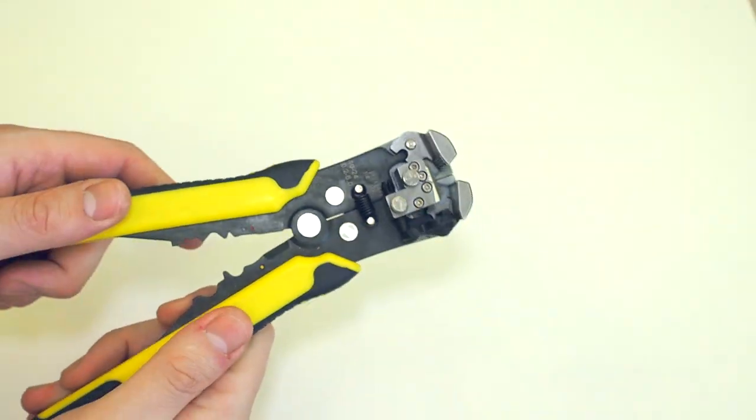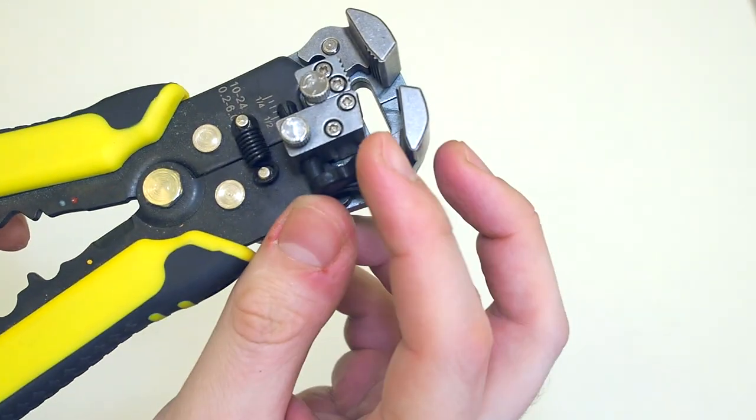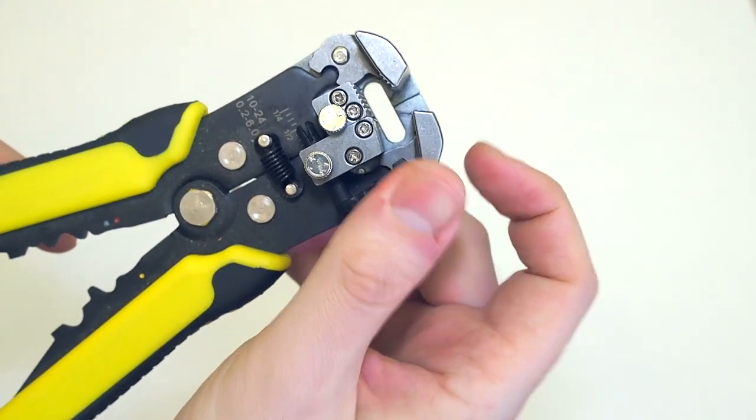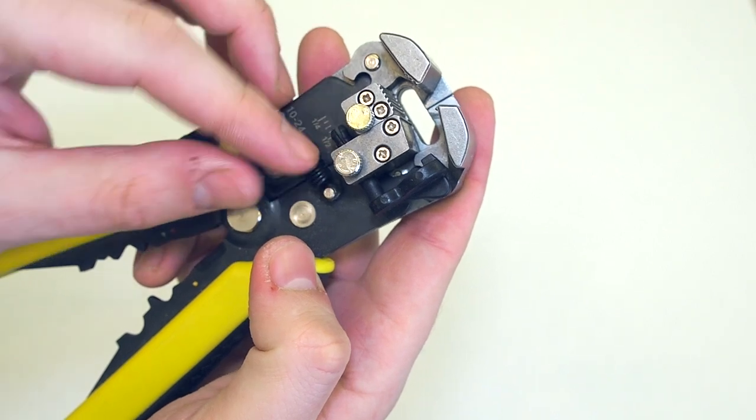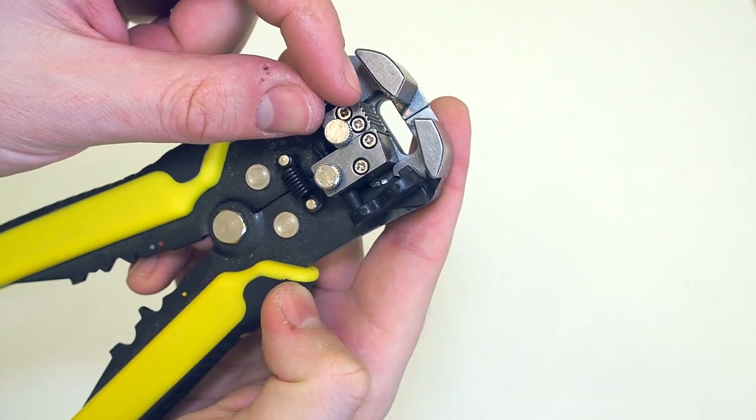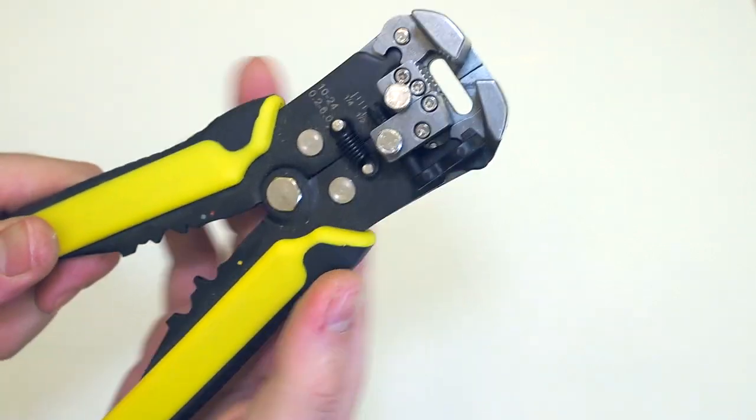To be fair I've had these pliers for about a year now and I have no problems using them. It has two adjustable rings. One for fixing the plastic limiter and second to adjust the strength of the stripper.